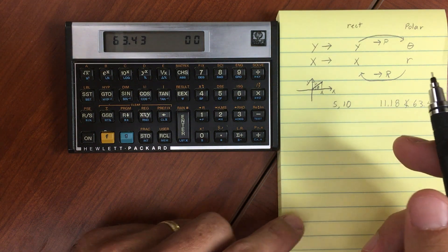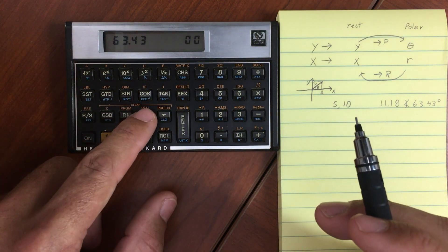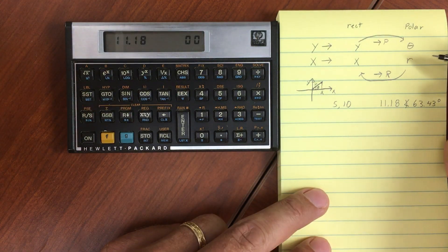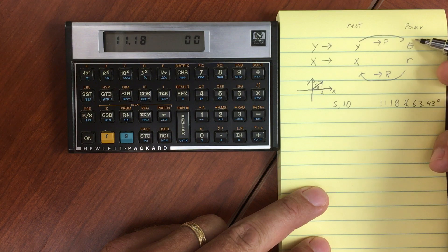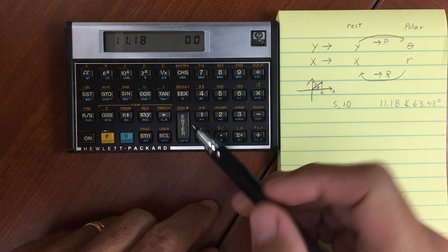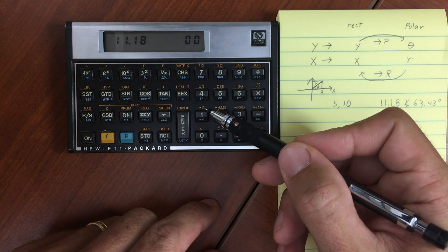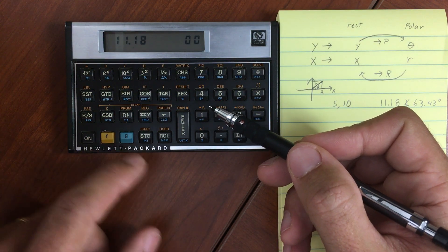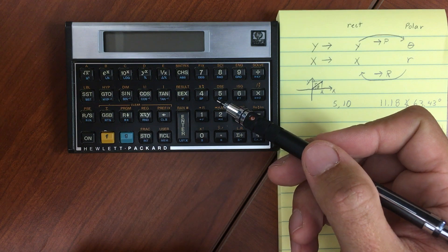To convert this back, let me swap my x and y back again, because I want to have my r in my x register and my theta in my y register. And I'm going to swap back to rectangular. So you'll notice above this key is the gold shift and then to rectangular mode.